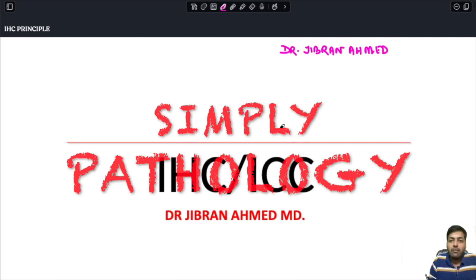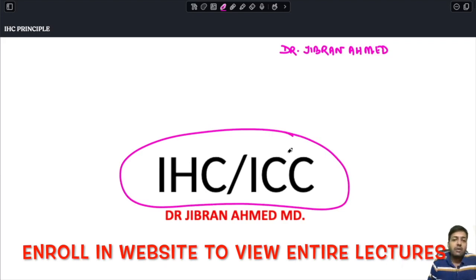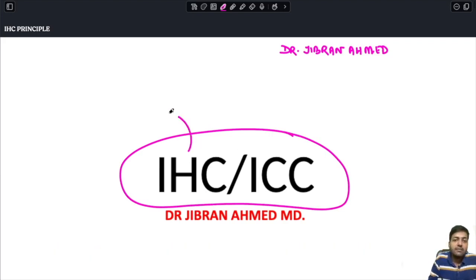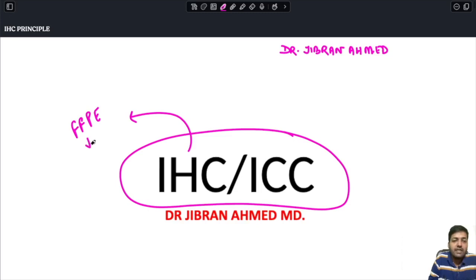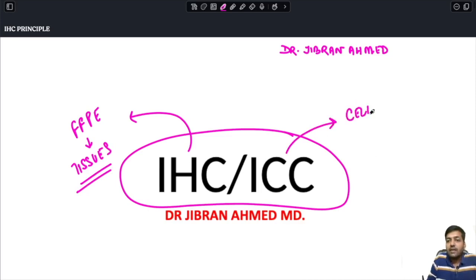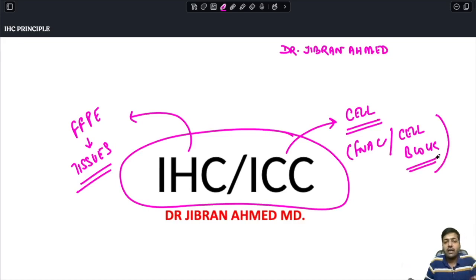Myself Dr. Gibran Ahmad presents to you Simply Pathology. Today we are going to read about immunohistochemistry (IHC) and immunocytochemistry (ICC). What is the difference? IHC is carried out on formalin-fixed paraffin-embedded tissue blocks — on tissue specimens — whereas immunocytochemistry is carried out on cellular samples such as FNAC material or cell blocks. The basic principle of both IHC and ICC is the same, which is why we discuss them together.